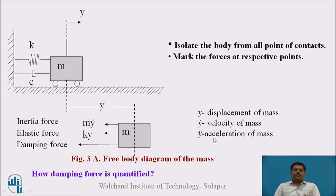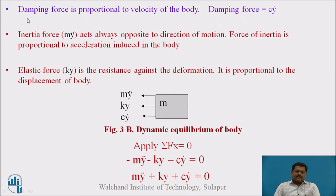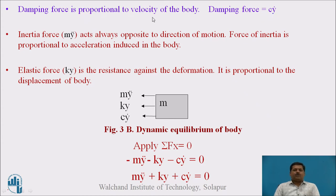This is the free body diagram of the mass. The quantification of the forces: the damping force is proportional to the velocity of the body — C is the damping coefficient, so damping force equals C·ẏ. As velocity increases, damping force increases; as velocity decreases, damping force decreases. The inertia force, as explained in free vibration, always acts opposite to the direction of motion, and equals m·ÿ. The elastic force, which is resistance against deformation, is proportional to displacement, equal to k·y.